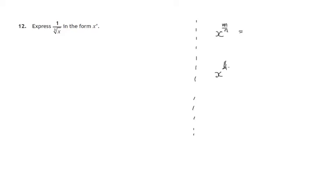Think of a tree. Where does the tree get its power from? From the sunlight coming in at the top — that's where the power is. And what's down at the bottom? The roots.